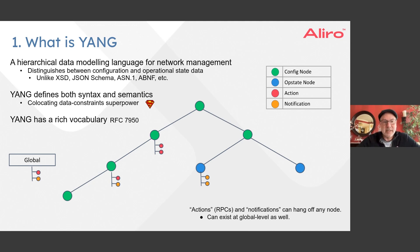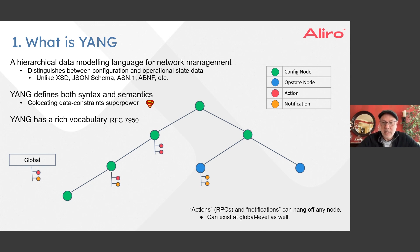Configuration and operational state are connected together through hierarchical relationships, and YANG is specific to network management. What's unique is it distinguishes between configuration and operational state. In the diagram, the green nodes represent configuration and the blue nodes represent operational state. A configuration node can only be a descendant of another configuration node — it can never be a descendant of an operational state node, because operational state nodes are transient or ephemeral, so having configuration underneath them would not make sense.